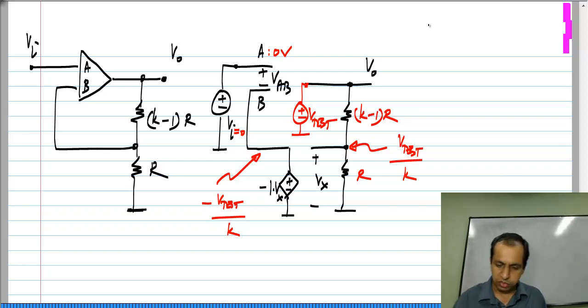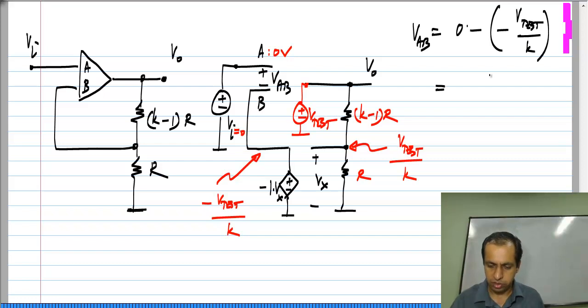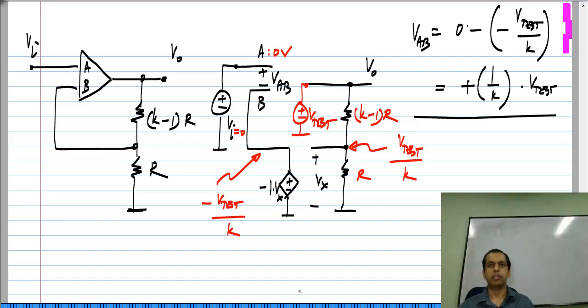So, the voltage V a B is nothing but 0 which is the voltage at node A minus voltage at node B which is negative of V test by k. So, this is plus 1 by k times V test. So, it is the same magnitude of the voltage as before, but the sign is reversed.